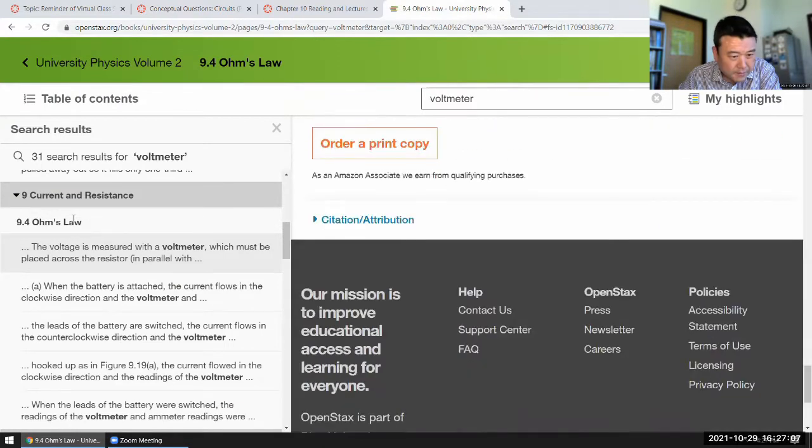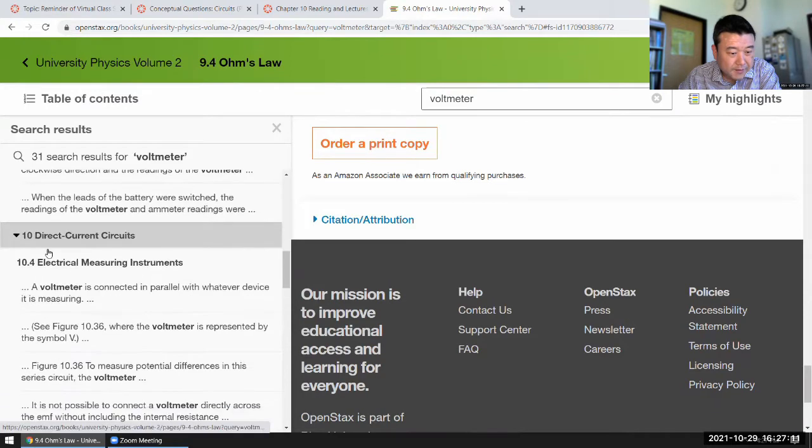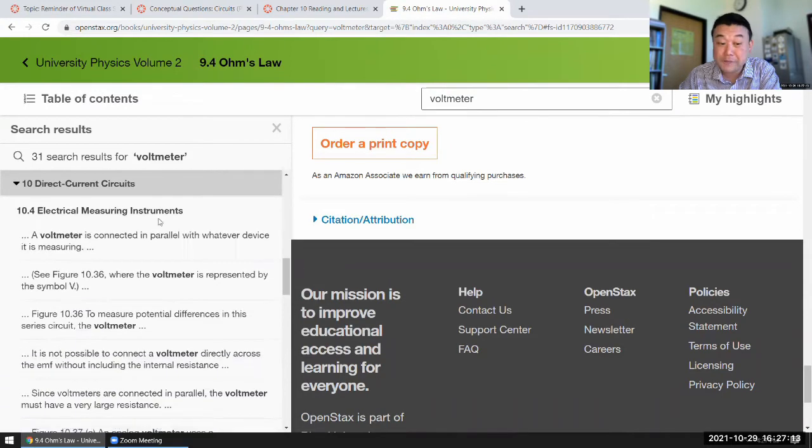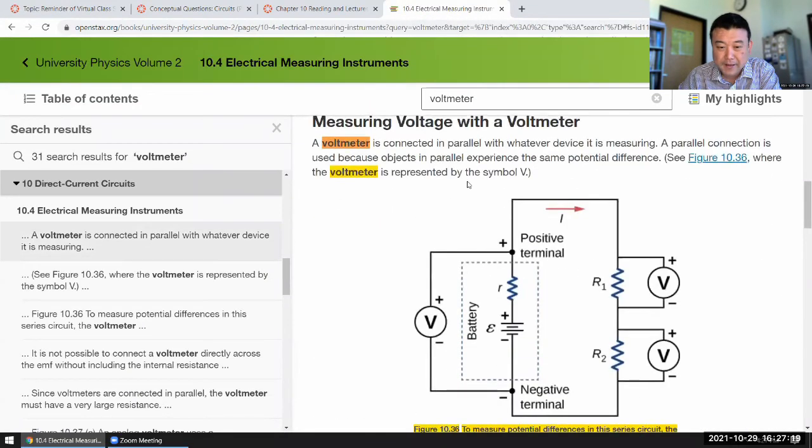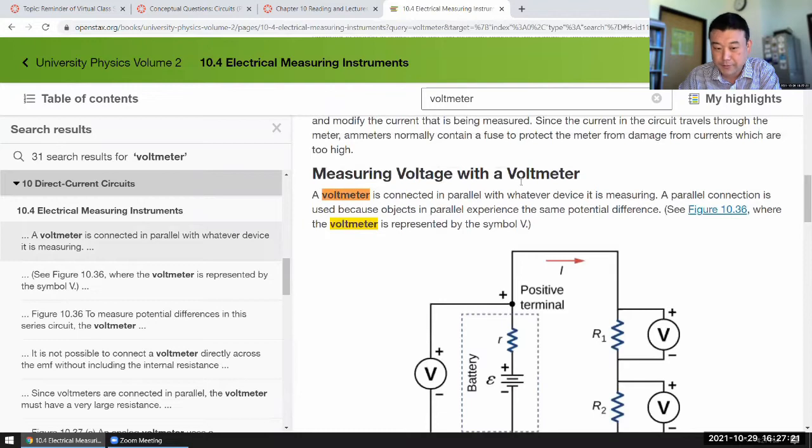I don't think I really see that in this section. Let me see what other sections might have that. Electrical measuring instruments, section 10.4. Let's take a look at that. Measuring voltage with a voltmeter. So a voltmeter is connected in parallel. You've seen that.